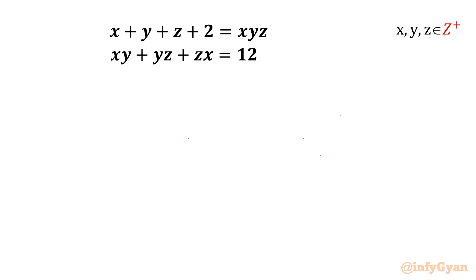Welcome back to Infigyan, my dear friends. Today in this video we are going to take up one very interesting and challenging Diophantine equation. The equations are: x plus y plus z plus 2 equals xyz, and xy plus yz plus zx equals 12, where x, y, z are positive integers. I will begin by writing equation numbers 1 and 2.